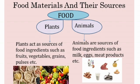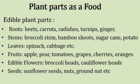Plants act as a source of food ingredients such as fruits, vegetables, grains, pulses, and cereals. Animals are a source of food ingredients such as milk, eggs, and meat products.